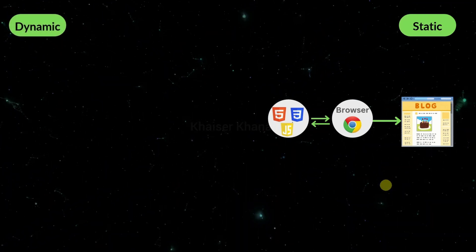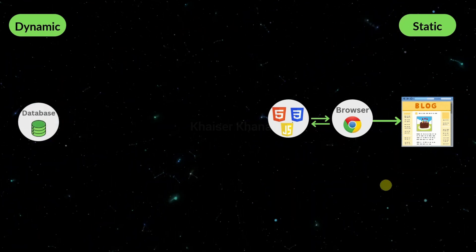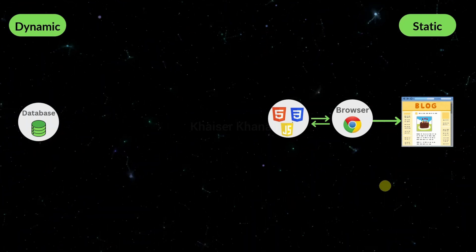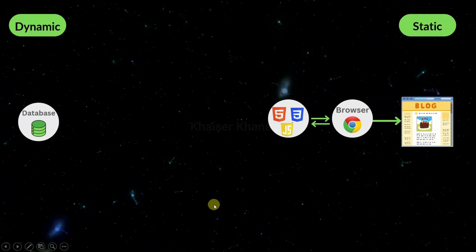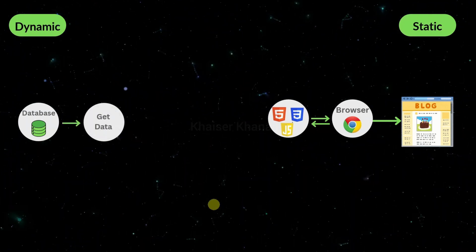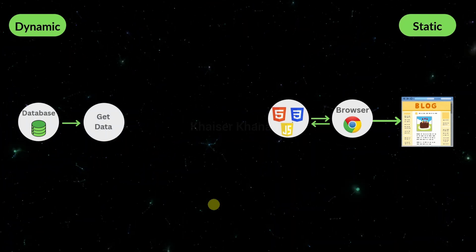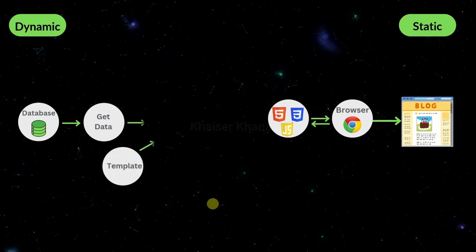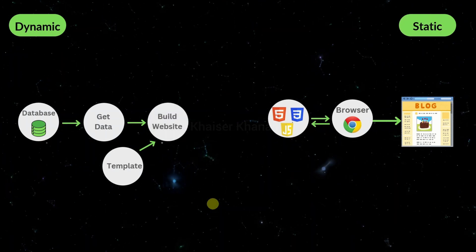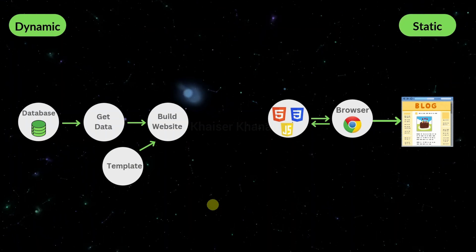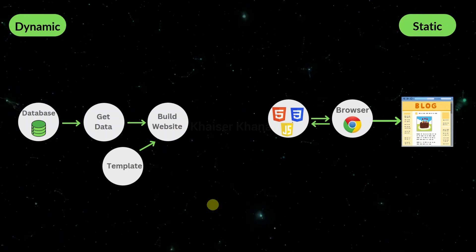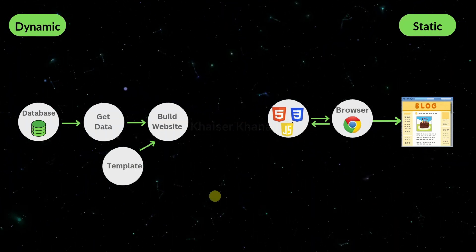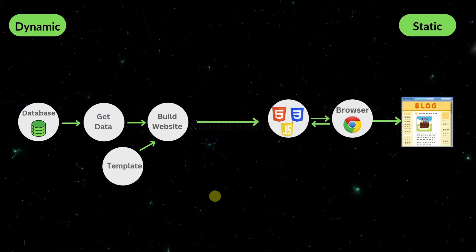Now coming to dynamic websites — here the website content will be built dynamically on the server each and every time a request is made. This kind of website will always have a database, and then we have our server logic. For example, Node.js, using which we can fetch the data from the database and then combine the data with predefined templates to generate pages dynamically. Remember, this kind of website will be created on the server — we generate the pages dynamically and then send the resulting HTML, CSS and JavaScript to the browser.